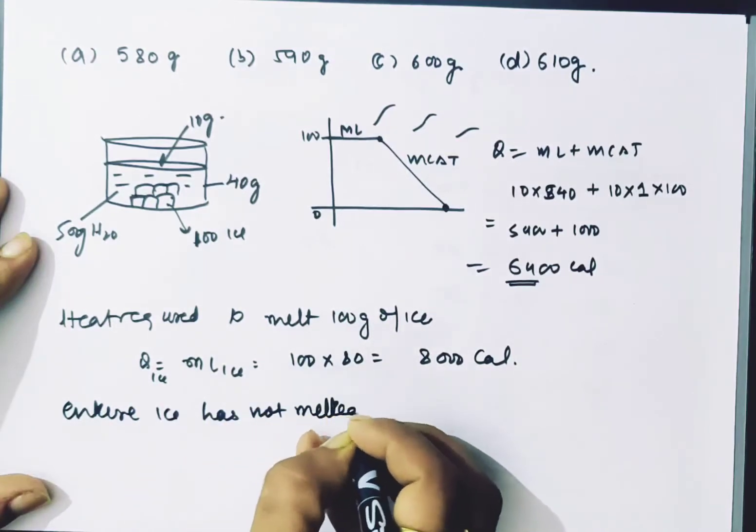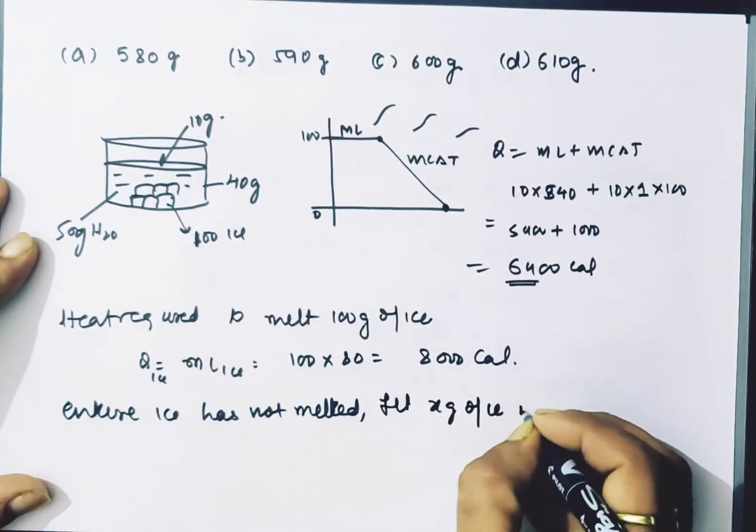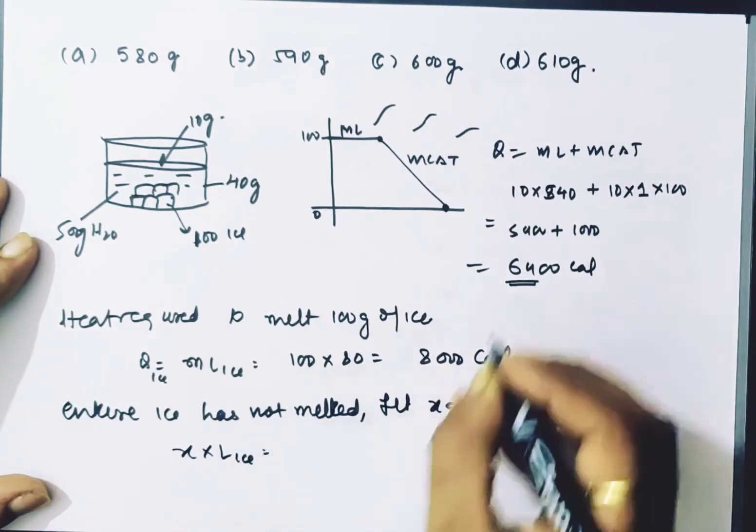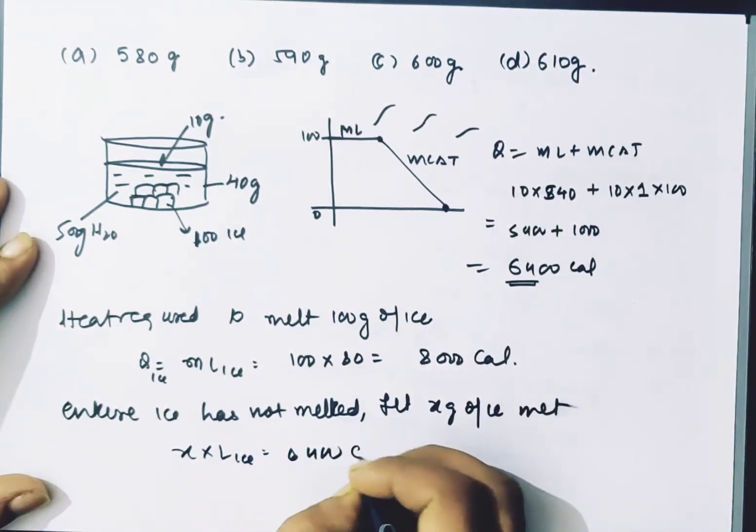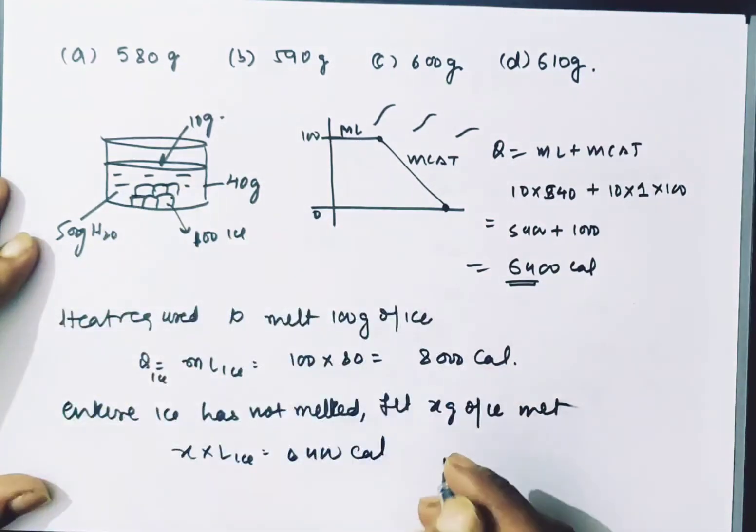So now we will say let x grams of ice melt. x times L of ice equals 6400 calories. And when ice is still present, the whole temperature of the system will be 0 degrees because ice at temperature above 0 degrees is not possible.